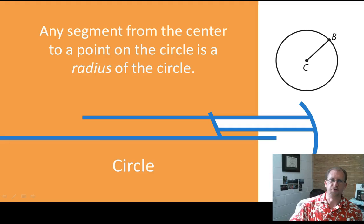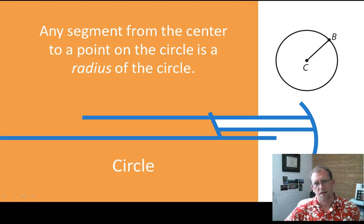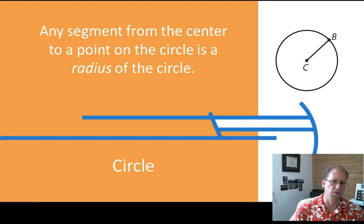As promised, here's the definition of the word radius. So this is any segment that starts on a circle and goes to the center. So it's labeled here as CB, but I could draw another radius here or another radius here or another radius here. A radius is any segment that starts at the center and goes to the edge of the circle.